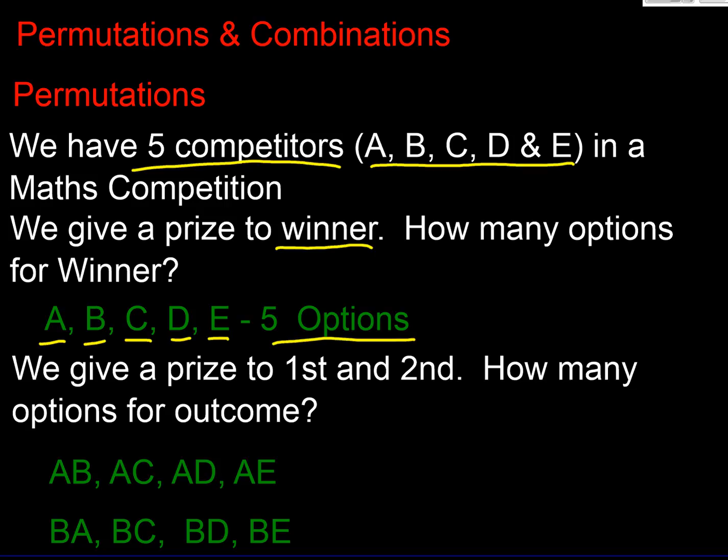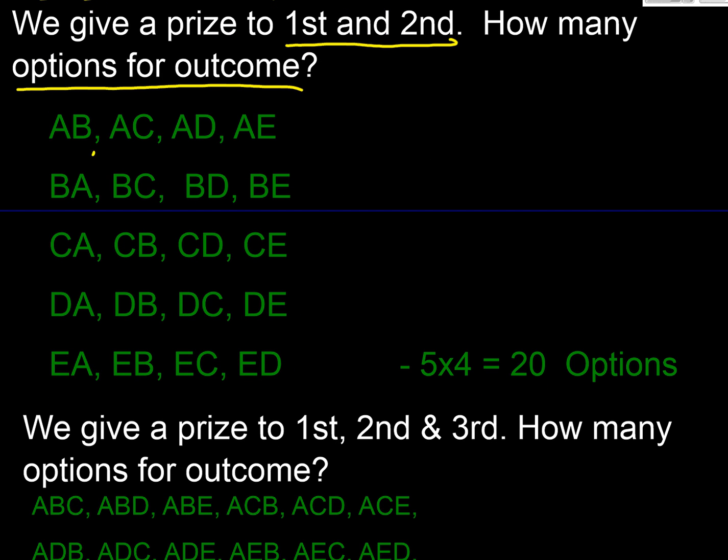Let's extend that and we're going to build the pattern up. Now let's give a prize to both first and second. Well how many options do we have? Well, A could win, B could come second. A could win, C could come second. And you'll see here that I've done a sequence here. So there's four ways of A winning with somebody else coming second. There's four ways of B winning with somebody else coming second. Four ways of C winning, four ways of D winning and four ways of E winning. So what we've got here is in effect five winners. Once we pick the five winners, we've only got four people left to come second and that creates our 20 options. So we started off with five and now we've got five times four.